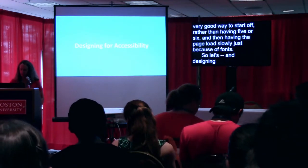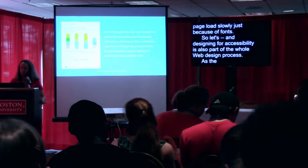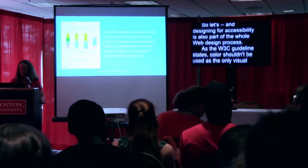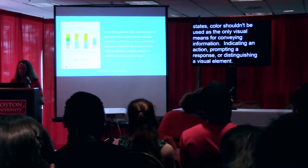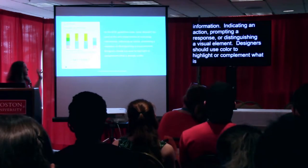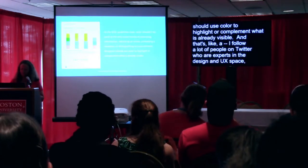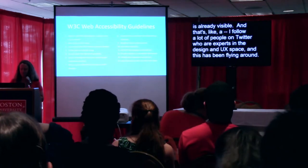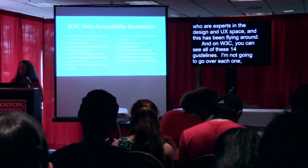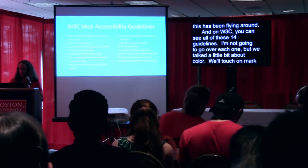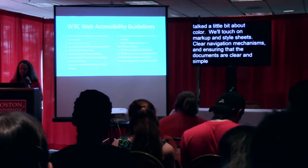Designing for accessibility is also part of the whole web design process. As the W3C guidelines state, color shouldn't be used as the only visual means for conveying information, indicating an action, prompting a response, or distinguishing a visual element. Designers should use color to highlight or complement what is already visible. The W3C has 14 guidelines — including color, markup and style sheets, clear navigation mechanisms, and ensuring documents are clear and simple.